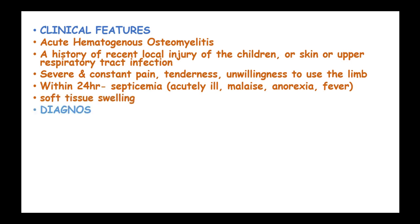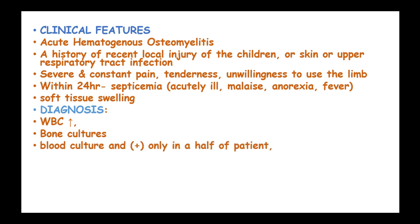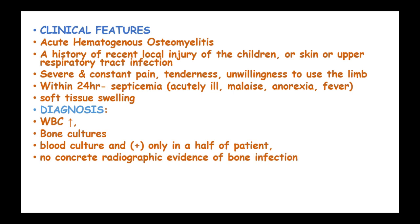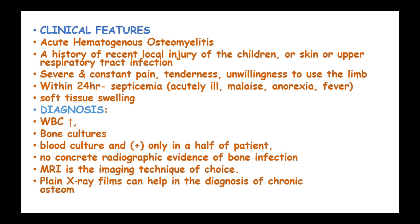Soft tissue swelling on the infected limb will be present. Diagnosis includes a complete blood count showing elevated white blood cells, bone cultures, and blood cultures, which are only positive in half of patients. There is no concrete radiographic evidence of bone infection at early stages, and MRI is the imaging technique of choice. A plain X-ray film can help in diagnosis of chronic osteomyelitis.